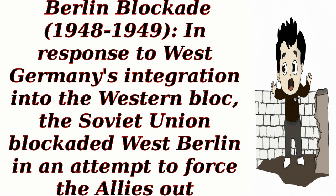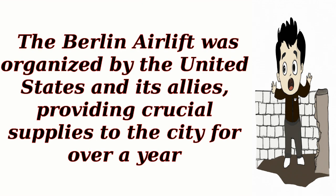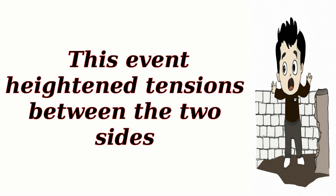Berlin Blockade, 1948–1949: In response to West Germany's integration into the Western Bloc, the Soviet Union blockaded West Berlin in an attempt to force the Allies out. The Berlin Airlift was organized by the United States and its Allies, providing crucial supplies to the city for over a year. This event heightened tensions between the two sides.